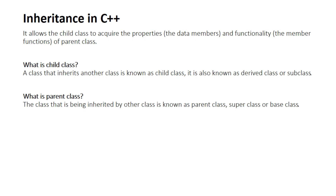Child class inherits the properties of another class, and it is also called derived class or subclass. What is a parent class? The class that is being inherited by another class is known as the parent class — also called superclass or base class.